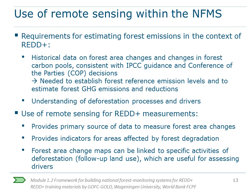Remote sensing has become a very important tool in developing national forest monitoring systems — including data collected by sensors on satellites and airplanes. Remote sensing is very useful because data has been collected for decades, and archives allow countries to construct historical baselines or forest reference emission levels for REDD+. Different kinds of data with different resolutions and quality are now available, and the principal use of remote sensing is to estimate forest area changes over time — the primary source for measuring this variable.